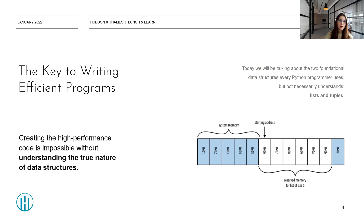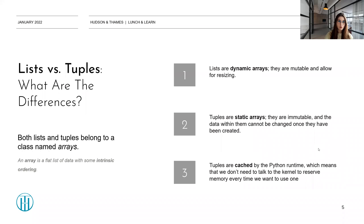We're going to be talking about lists and tuples. What is the big difference? Both lists and tuples are arrays, essentially, meaning that they are just a flat list of data with some intrinsic ordering. However, lists are the dynamic type of arrays as they support mutability and allow for resizing. Tuples, however, are static arrays — they are immutable and the data within them cannot be changed once they have been created. This is very important to remember.